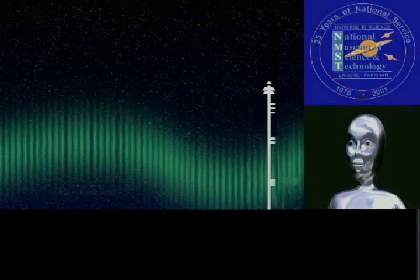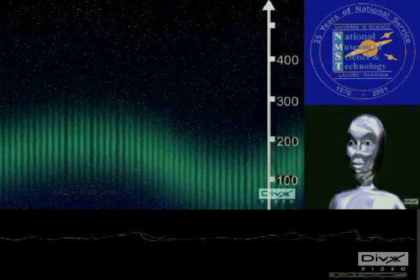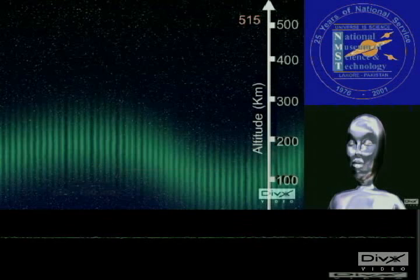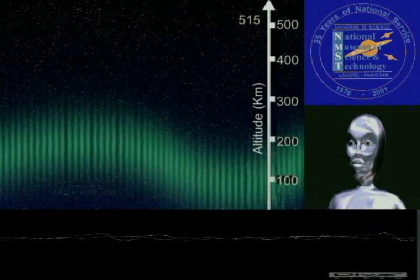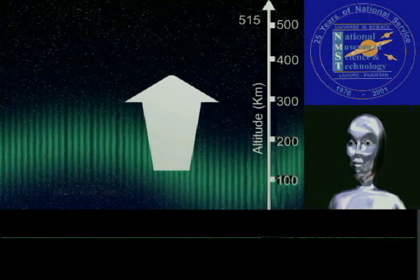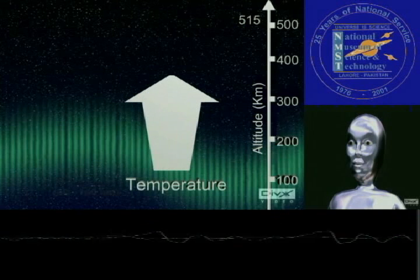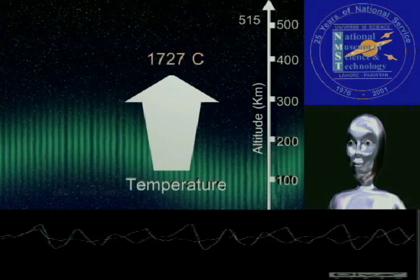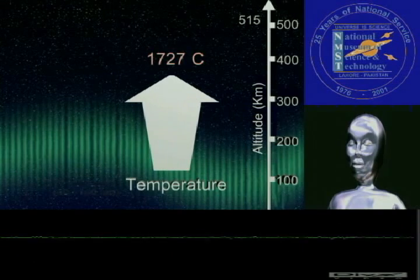The thermosphere starts just above the mesosphere and extends to 515 km above the mesosphere. The temperatures go up as you increase in altitude due to the sun's energy. Temperatures in this region can go as high as 1727 degrees Celsius.